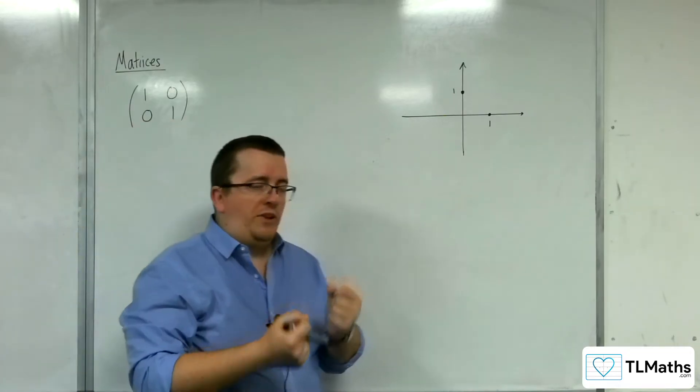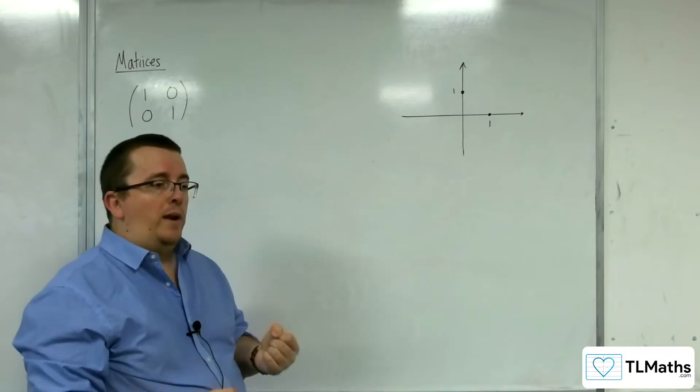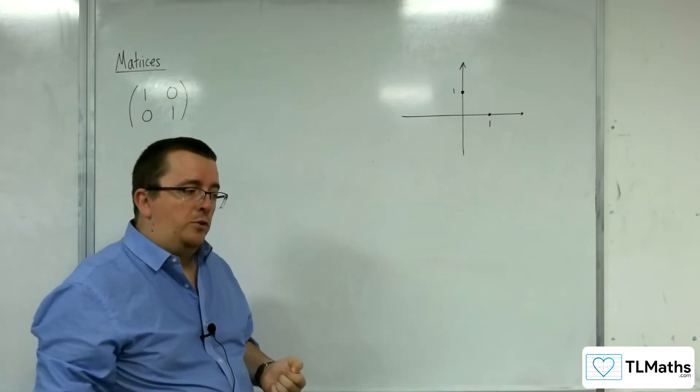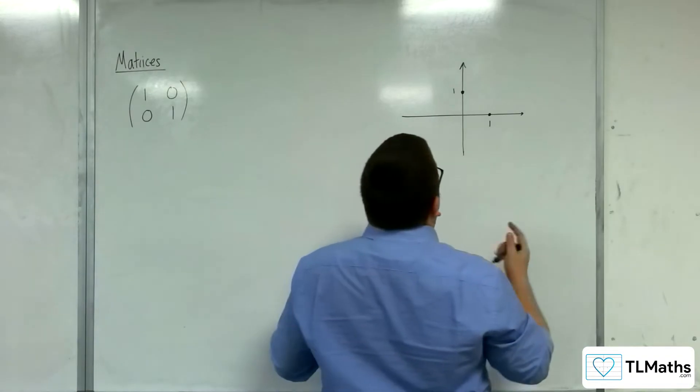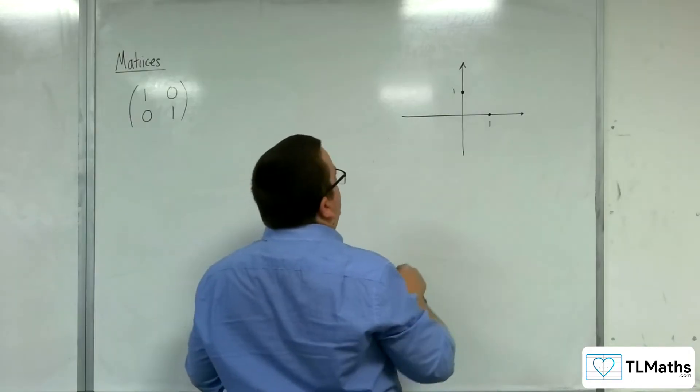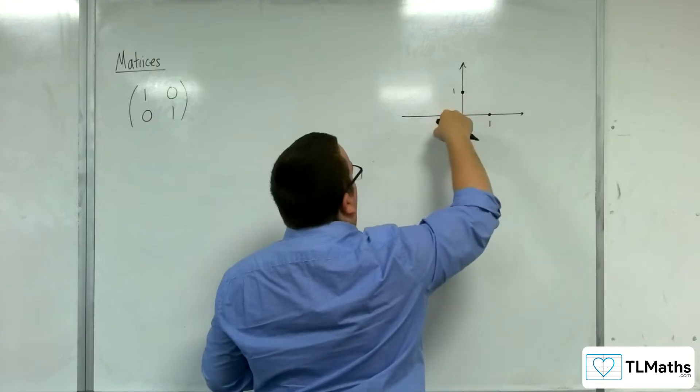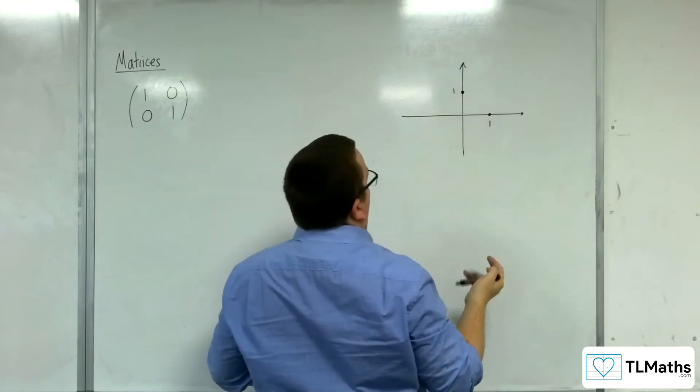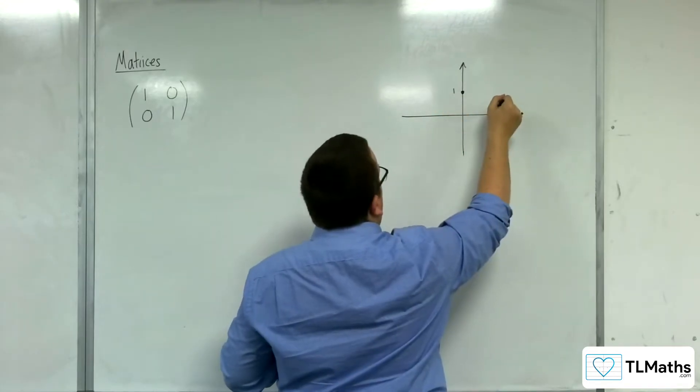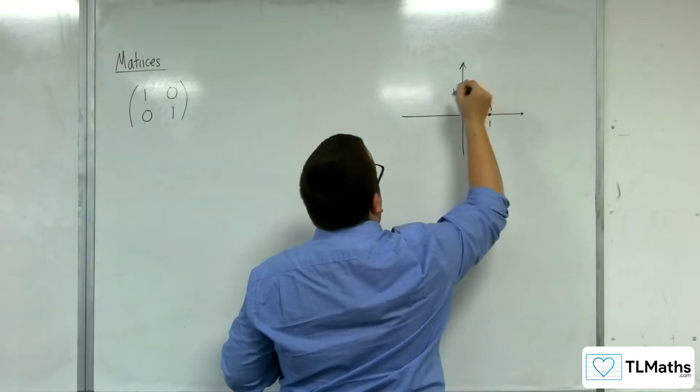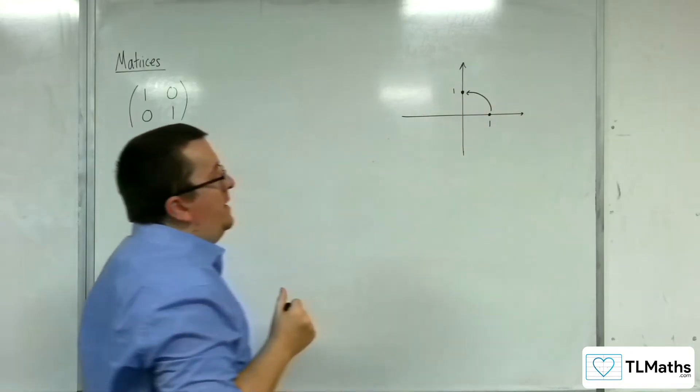So we can work out the rotation matrix just by following where these points go to. So let's say that I rotated by 90 degrees anticlockwise about the origin. So what would happen is that this point would go and be mapped onto this point here.